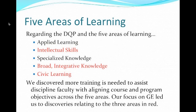As many of you know from reading materials about the Degree Qualifications Profile, there are five areas of learning identified in the DQP. We show them here as: applied learning, intellectual skills, specialized knowledge, broad integrative knowledge, and civic learning. We discovered that more training was needed to assist our faculty in understanding and aligning our courses and program objectives to these five areas.